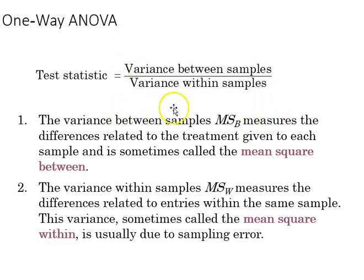The variance between the samples is denoted as MSB, and that measures the difference related to the treatment given to each sample, sometimes called the mean square between.